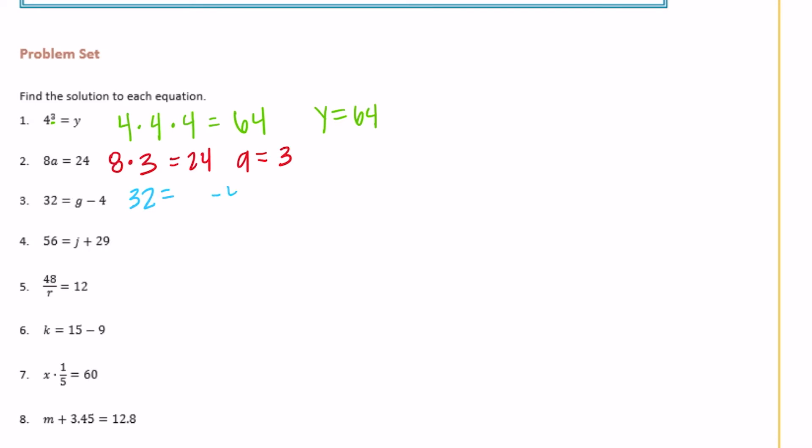Or 32 is equal to what minus 4. So something minus 4 equals 32. So what is 4 more than 32? Basically it would be 36. So g is equal to 36. Number 4: 56 is equal to j plus 29.